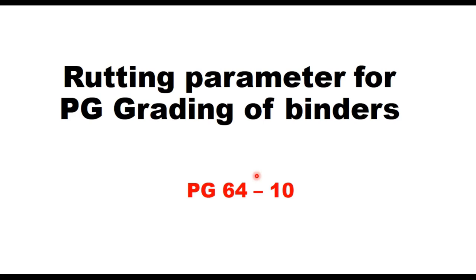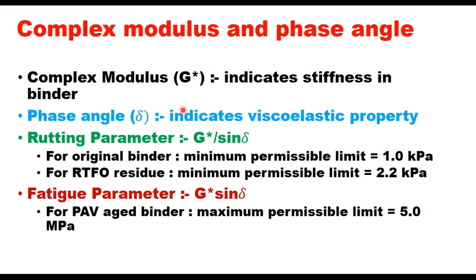Today we shall discuss the rutting parameter for PG grading of asphalt binders. Dynamic shear rheometer is used to determine this parameter. Two parameters are defined: complex modulus, that is G*, and phase angle delta. Complex modulus indicates stiffness in the binder whereas phase angle indicates viscoelastic property of the binder.